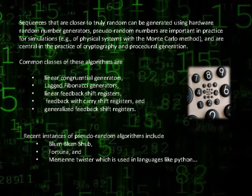feedback with carry shift registers and generalized feedback shift registers. Recent instances of pseudo-random algorithms include Blum Blum Shub, Fortuna, and the famous Mersenne Twister which is used in languages like Python.